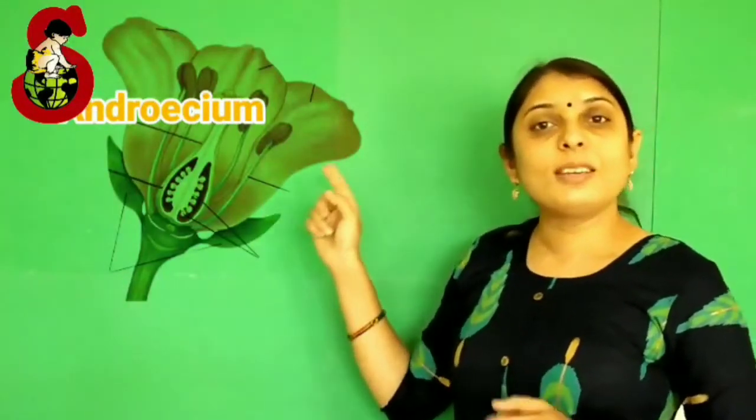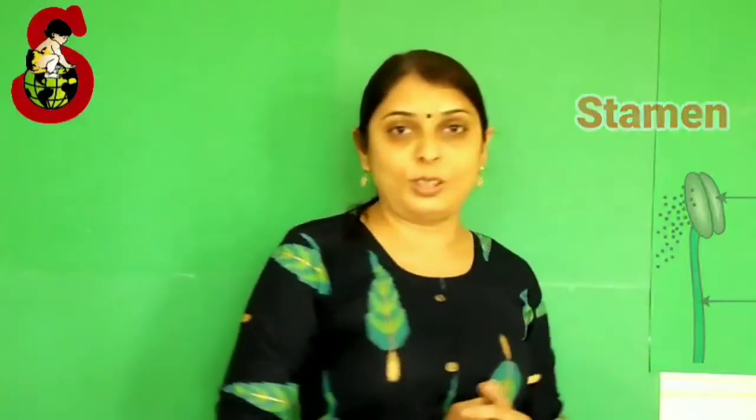We have discussed two vegetative whorls: calyx and corolla. Now we are going to discuss the reproductive parts of flower. It also includes two whorls: androecium and gynoecium. Androecium is the male part of a flower and it is made up of stamen. The unit of androecium is stamen. Further, the stamen is divided into three different structures. First, the bilobed structure, that is the anther. Then a thin slender filament. Both anther and filament are connected with the connective tissue. Collectively, stamens make up the androecium.